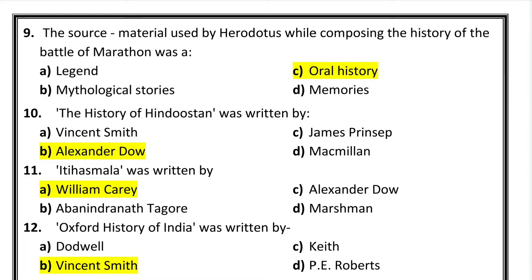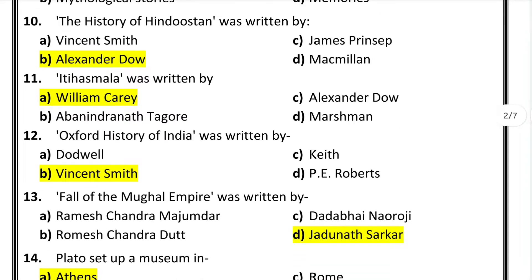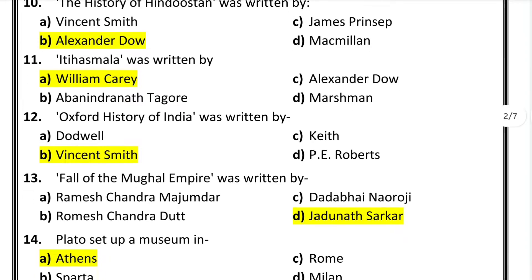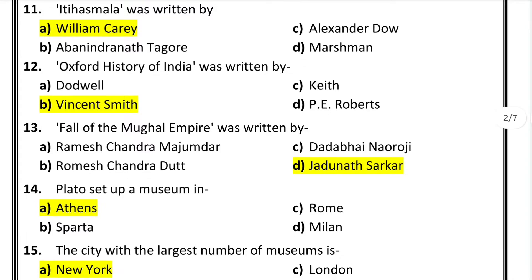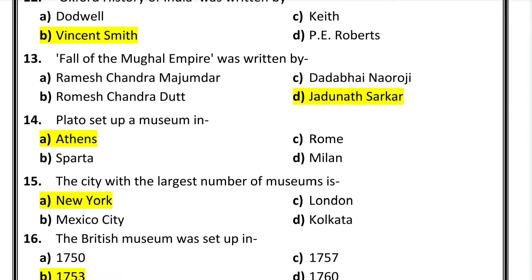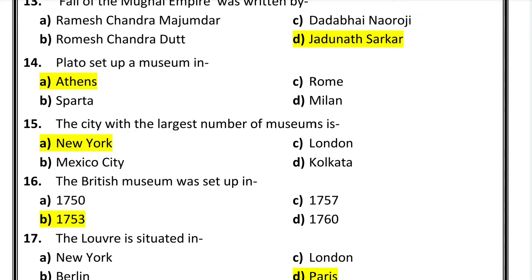Question number 10: the history of Hindustan was written by Alexander Doe. Question number 11: Itihas Mala was written by William Carey. Question number 12: Oxford History of India was written by Vincent Smith. Question number 13: Fall of the Mughal Empire was written by Jadunath Sarkar. Question number 14: Plato set up a museum in Athens.